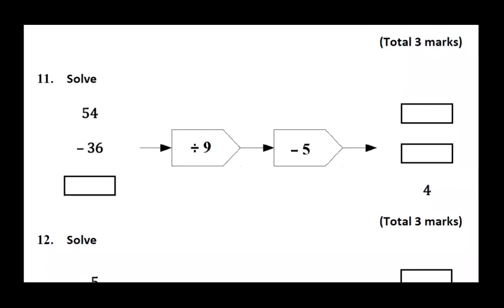Question 21: The function machine is divide by 9 and subtract 5. If the input is 54, 54 divided by 9 gives 6. 6 subtract 5 gives 1. If the input is negative 36, divide by 9 gives negative 4. Negative 4 subtract 5 gives negative 9.